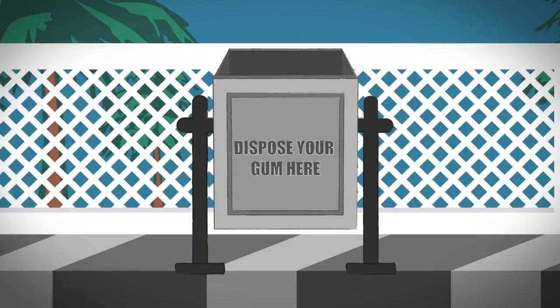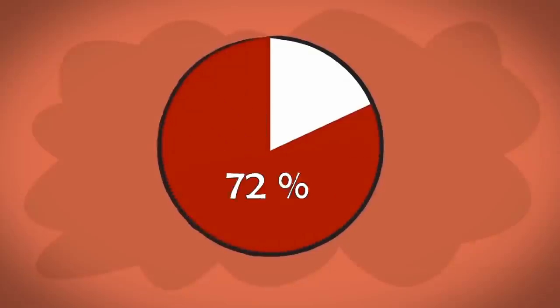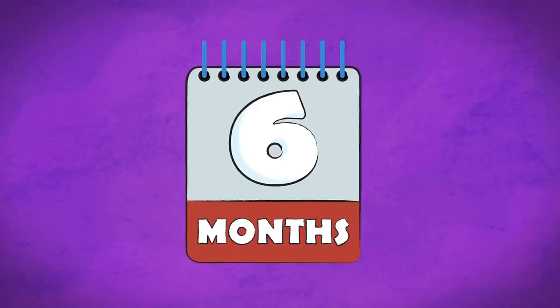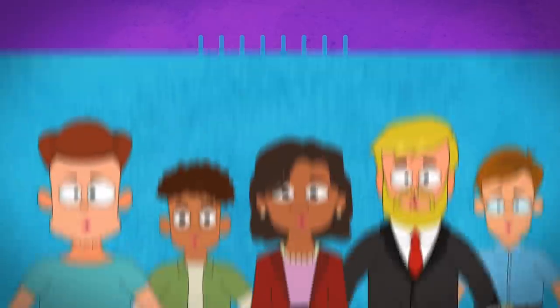Cities have begun introducing receptacles, specifically made for the disposing of gum. Amazingly, gum litter has been cut down by 72% in six months as a result in these cities.